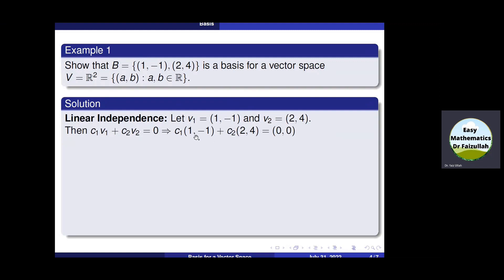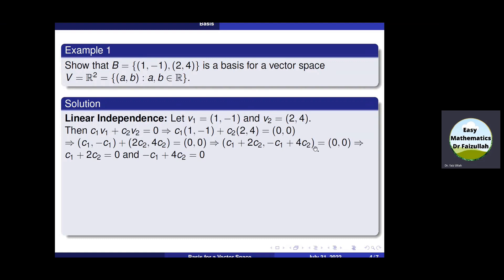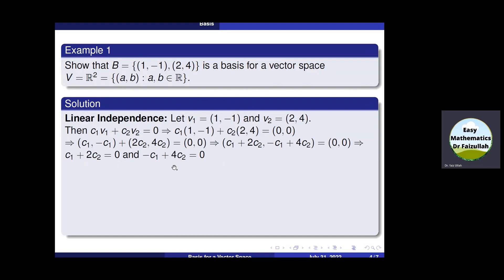Multiply C1 inside and C2 inside, then add the first components together and the second components together and compare both sides. This gives two equations. Now the task is to solve these two equations to get the values of C1 and C2. One method is to add the two equations — C1 cancels and we get C2 equal to 0. Substituting C2 equal to 0 into either equation gives C1 equal to 0.